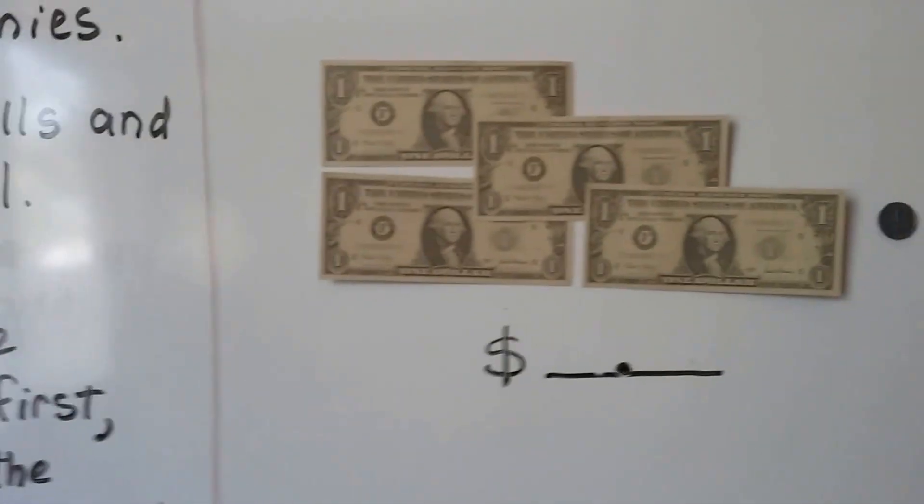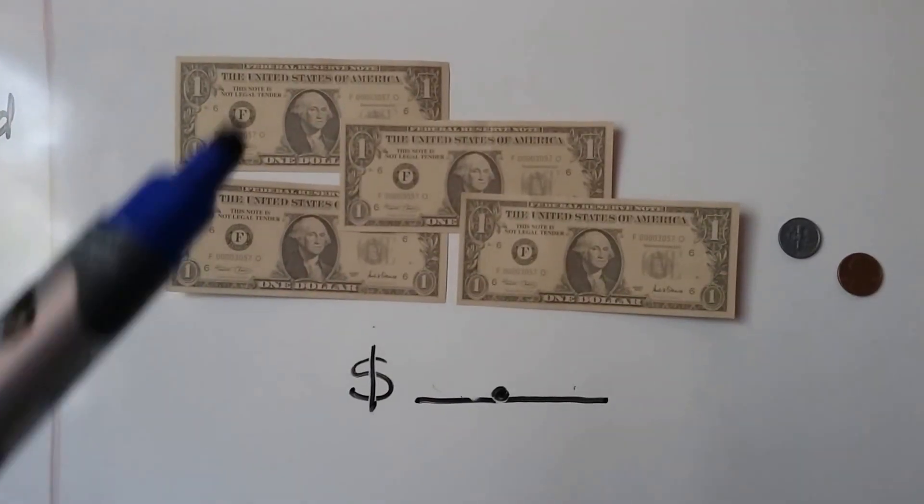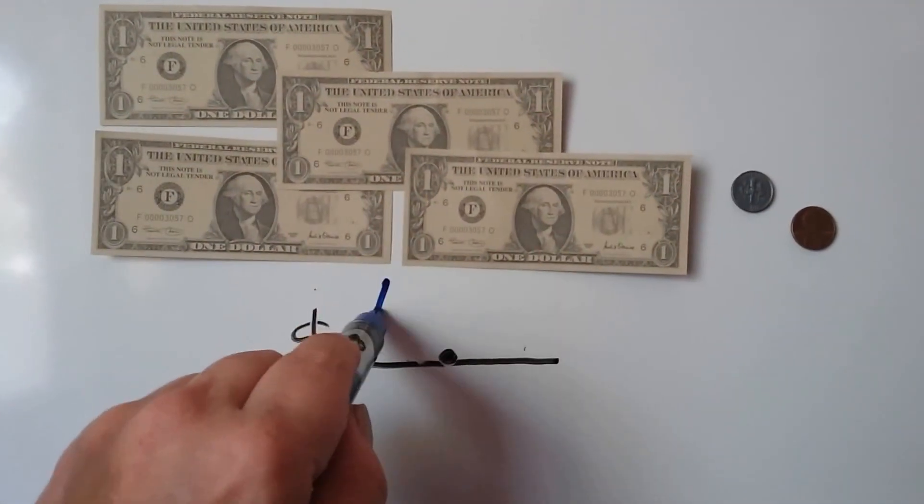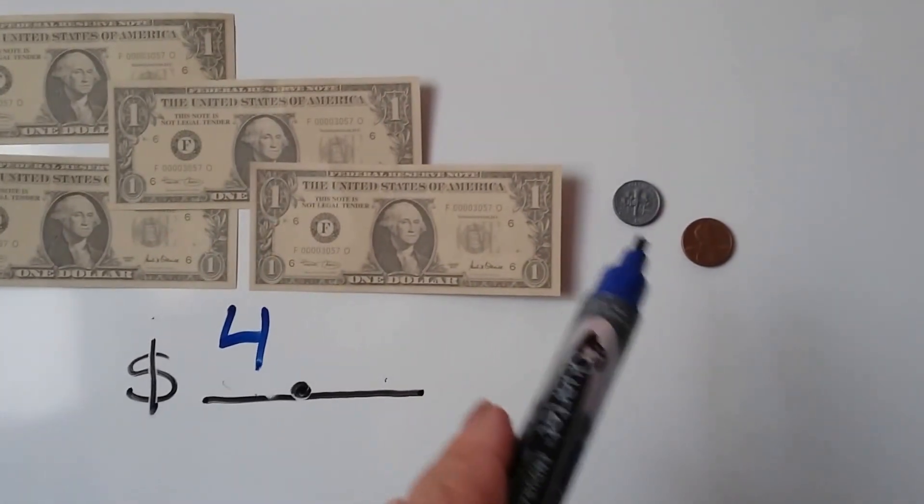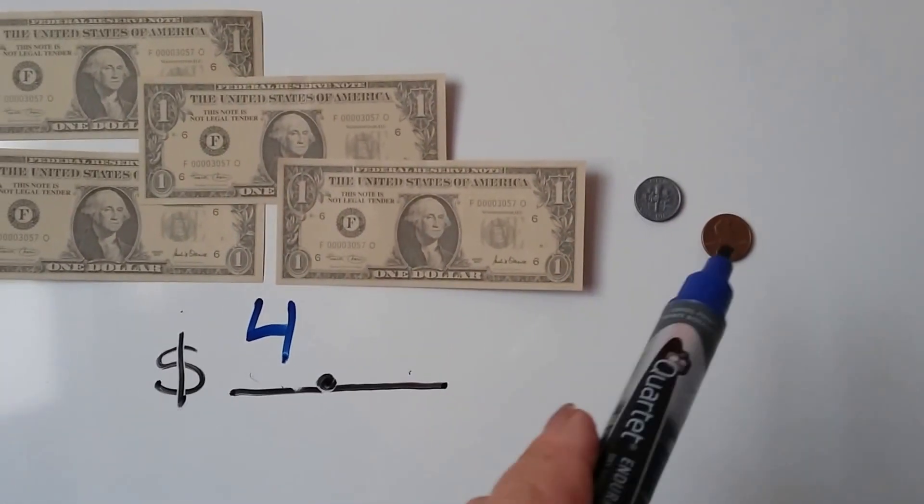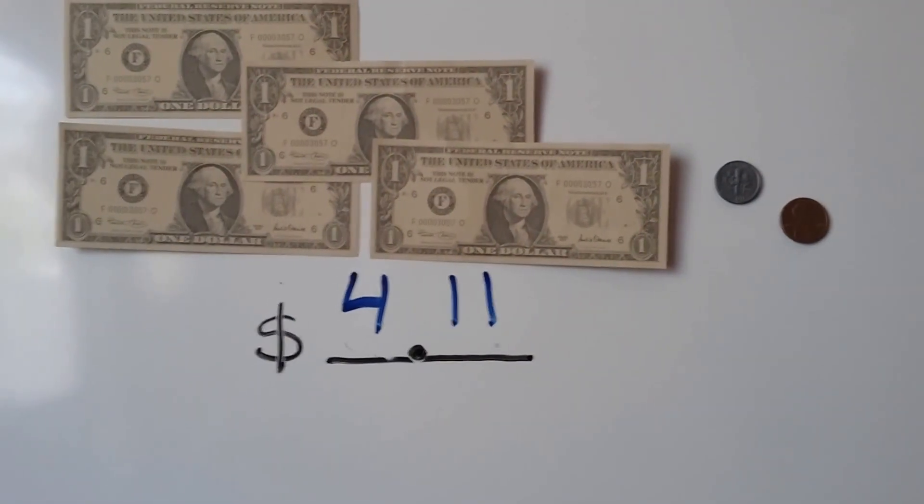So let's see if we can count this money. We start with the dollars first. How many dollars do we see? 1, 2, 3, 4 dollars. And how much in coins? We have a dime and a penny. That's a 10 and a 1. 10, 11. We have 4 dollars and 11 cents.